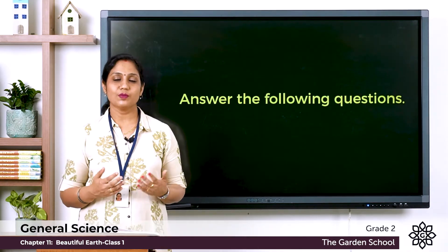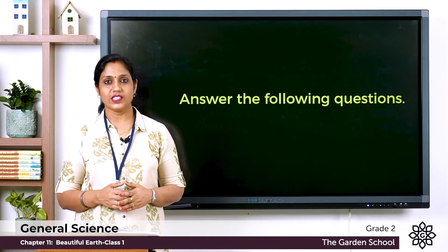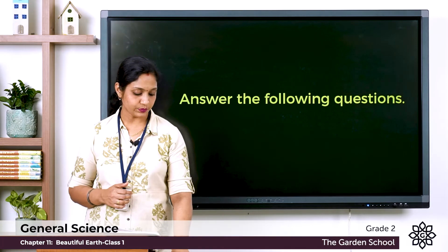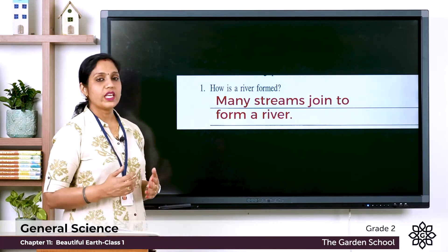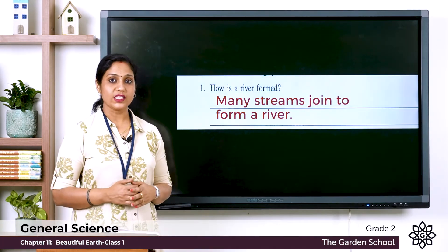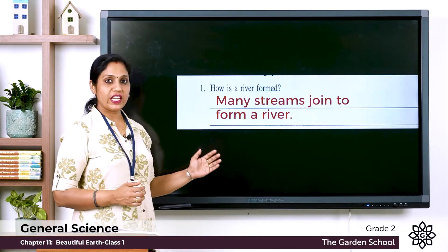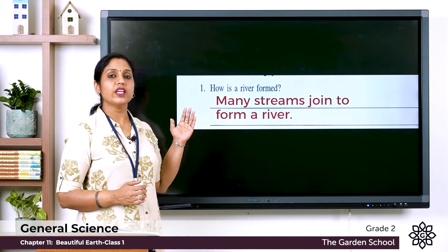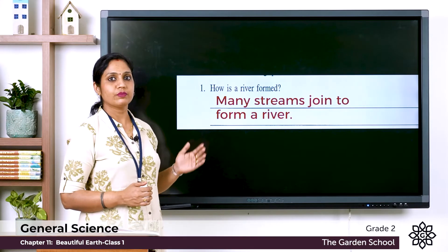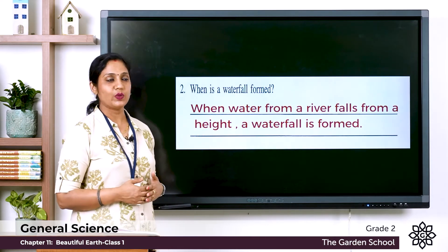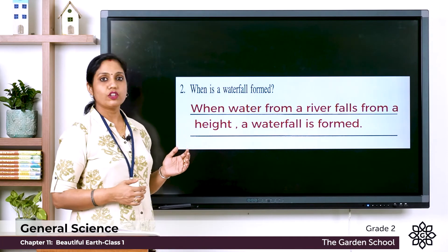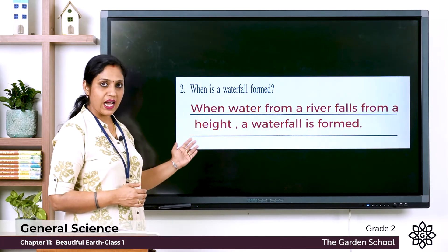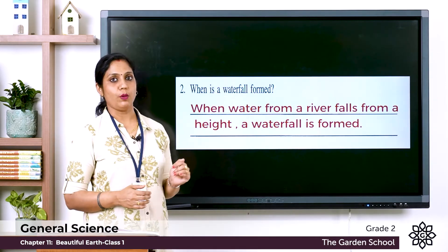Now let's move on to 'Answer the following questions.' You can write the answers in the textbook. Question one: how is a river formed? Answer: many streams join together to form a river. Question two: when is a waterfall formed? Answer: when water from a river falls from a height, a waterfall is formed.